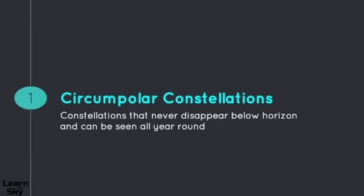The first type is called circumpolar constellations. These are ones that never disappear below the horizon and can be seen all year round. Now depending on where you are on the globe, you may see more or less of these, and also what your general location and terrain is like. For example, I have a big mountain that I live on and it covers a good portion of the sky, so some parts of the year I can't always see exactly these constellations, but if I would move I would be able to.